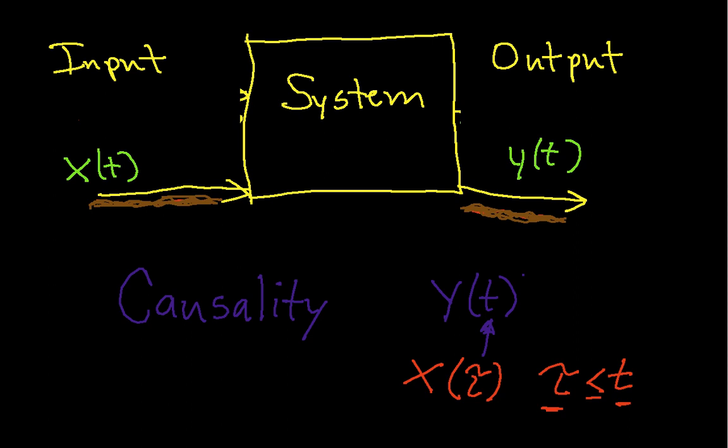Now, clearly, if we could come up with an uncausal system, then that would actually be very nice because you could do things like predict the stock market, you could have your system look into the future, tell you what the stock market is, and then you could invest accordingly.